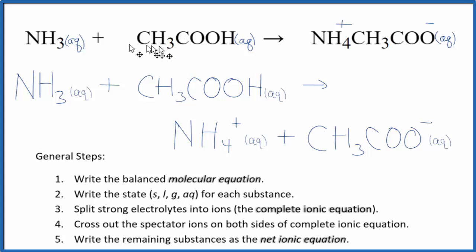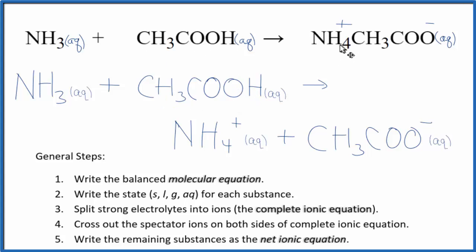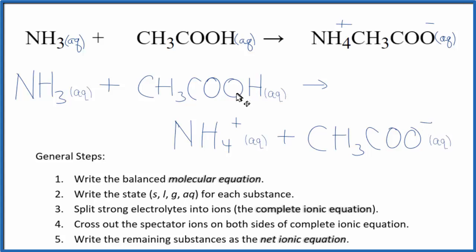The key to writing this net ionic equation is to realize that NH3 ammonia is a weak base, so it's a weak electrolyte — we don't split it apart. And acetic acid is a weak acid, also a weak electrolyte — we don't split it apart either. Ammonium compounds are very soluble, and acetate compounds are very soluble, so we do split ammonium acetate apart as a strong electrolyte. Note that charge is balanced: we have a plus and a minus, and if you count the atoms, they'll be the same on each side as well.